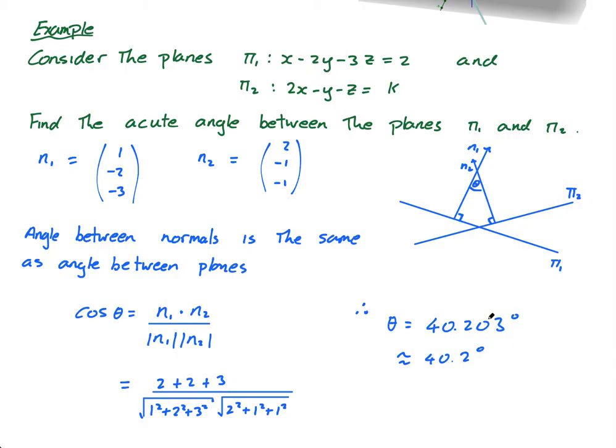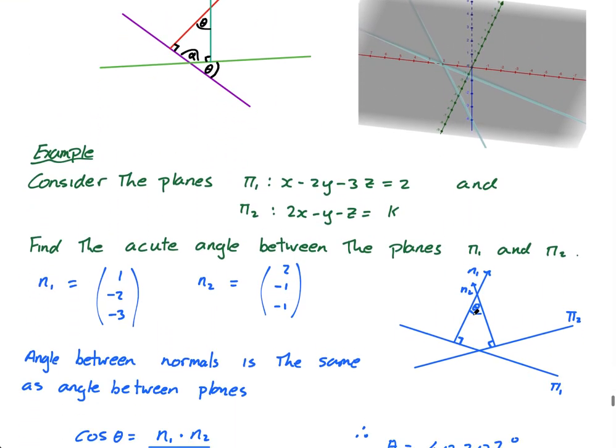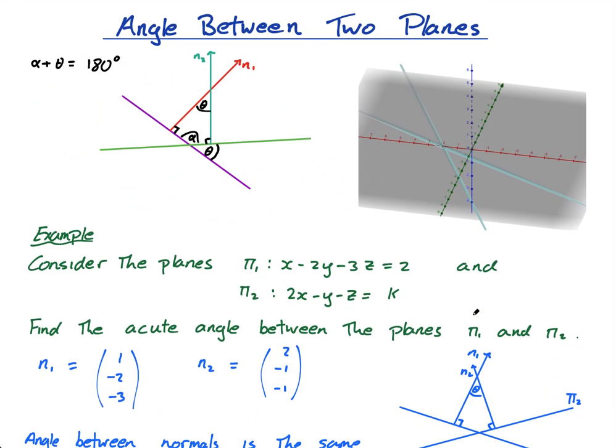And that's it, that is how you find the angle between two planes. The angle between two planes is the same as the angle between the two normals to those planes. I hope that makes sense, hope you enjoyed all these vectors lessons, and depending on what you're going on to next, I will see you in the next video.